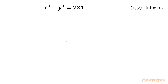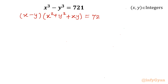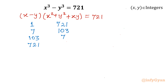Let's get started by writing the algebraic formula for a³ - b³. So we can write (x - y)(x² + y² + xy) = 721. Now we have to factorize 721. We can factor it as: 1 × 721, 7 × 103, 103 × 7, and 721 × 1.